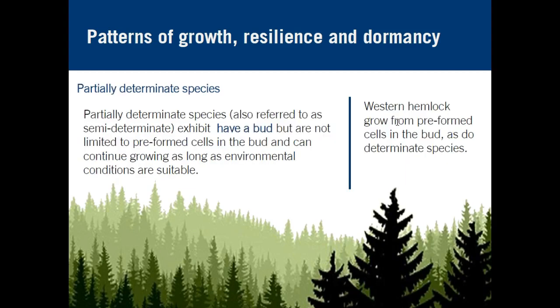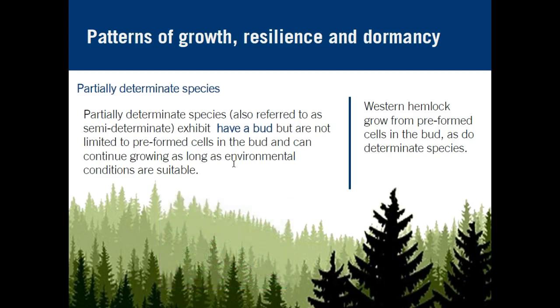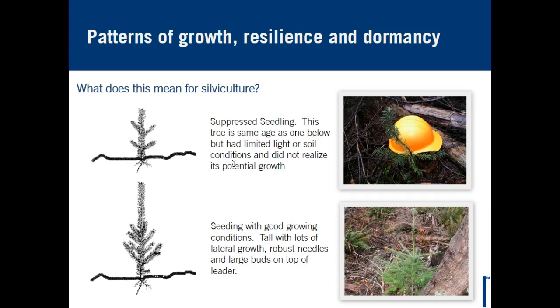Partially determinate species like western hemlock have preformed cells in the bud, as do determinate species, but they can also have some continual growth when environmental conditions are suitable. They don't necessarily go into the deep dormancy that Douglas fir does.